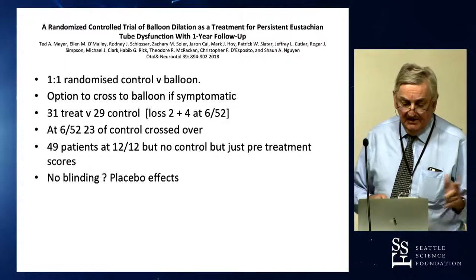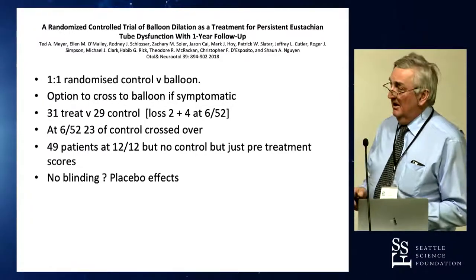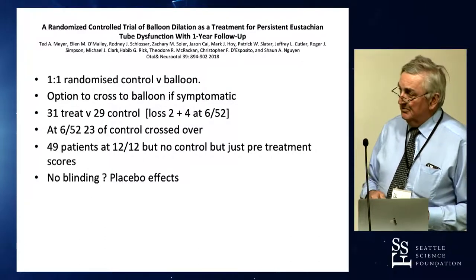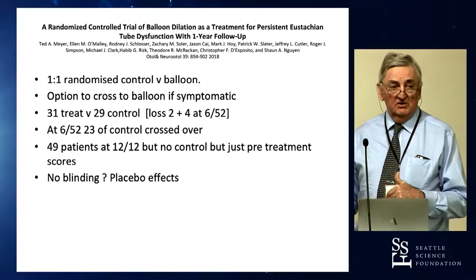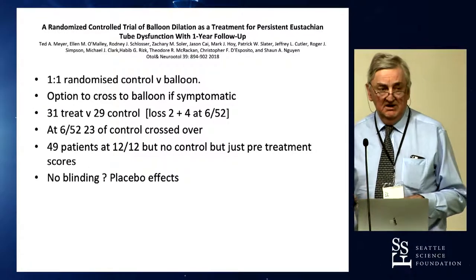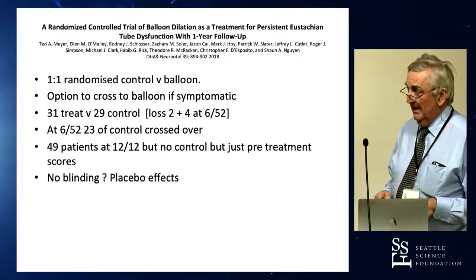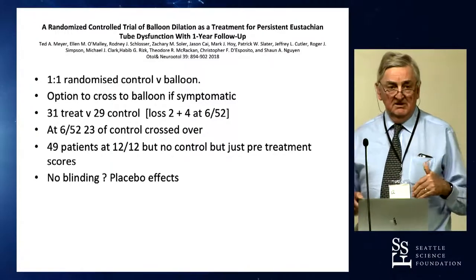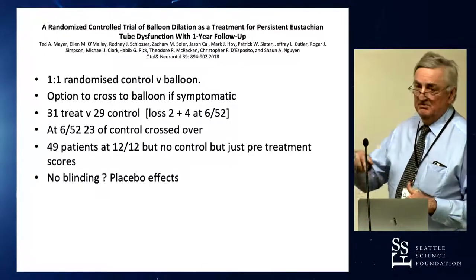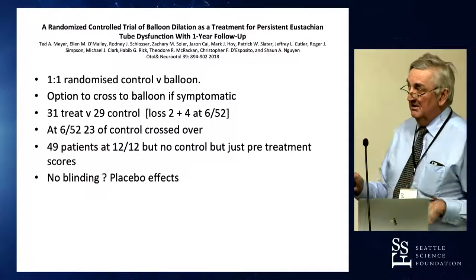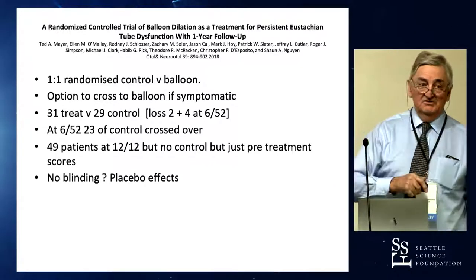So this paper by Mayer at the end of last year — I thought it looked good. One-to-one patient randomization: 31 in the treatment group going for balloon and 29 in the control, all satisfying a score of greater than three on the ETDQ-7 — but they hadn't read Matthew Smith's paper at that stage. They start off, it's six weeks, they get re-evaluated, and of the 29 controls, a few were lost to follow-up or got better.